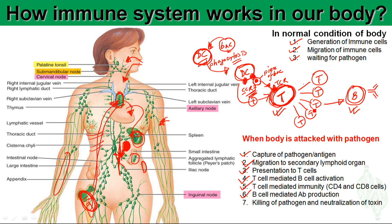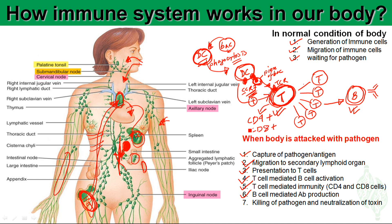After activation in the lymph node, the T cells and B cells — which are now activated and very specific to those bacteria — are released from the lymph node. The CD4-positive and CD8-positive T cells are released from the lymph node, and especially the CD8-positive T cells travel through the circulation to the specific site of infection, such as the lung where the bacteria was originally detected.